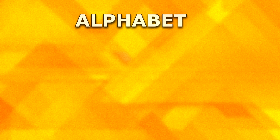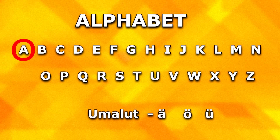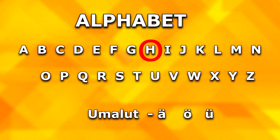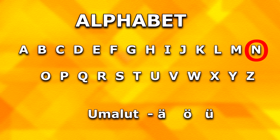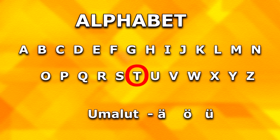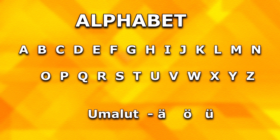Now, let us have a look at the alphabets in German. We start from the beginning: A, B, C, D, E, F, G, H, I, J, K, L, M, N, O, P, Q, R, S, T, U, V, W, X, Y, Z. In German, we also have additional alphabets like Umlauts — for example, A-Umlaut, O-Umlaut, and U-Umlaut. In the coming sessions, we are going to learn more about these letters.